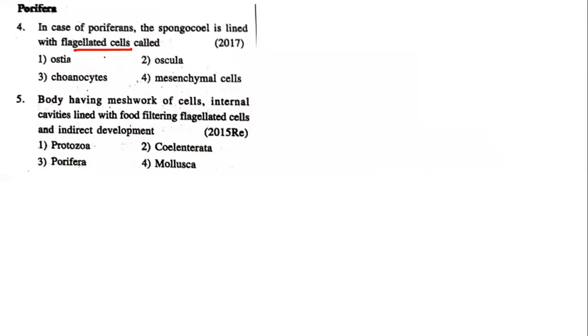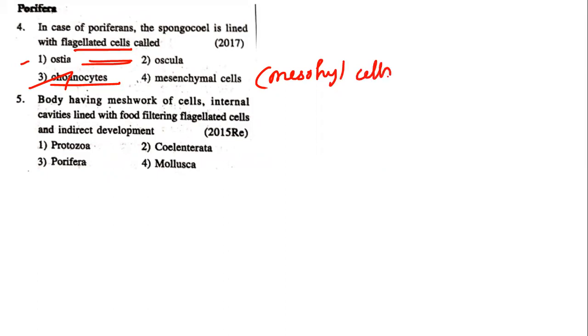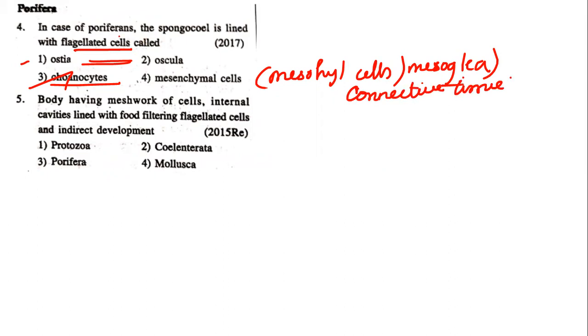This is a NEET question from 2017. In case of Porifera, the sponge cavity is lined with a flagellated cell. We all know which is the flagellated cell — choanocytes. So the answer is choanocytes. Ostia is the pore where water enters; osculum is where water is released. Both are connected with the canal system. Mesenchymal cells, also called mesohyle or mesoglia, act as connective tissue. So it is not related to this question — the answer is choanocytes.